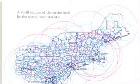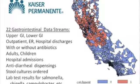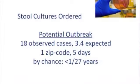We apply this to electronic health data using a space-time permutation scan statistic that only uses case data. It adjusts for purely spatial and temporal variation and accounts for multiple testing across many different locations and times of potential outbreaks. We tested this in California, comparing 22 different data streams from electronic health records. We found one signal of a stool culture order that by chance would happen less than once every 27 years — 18 observed cases versus 3.4 expected.